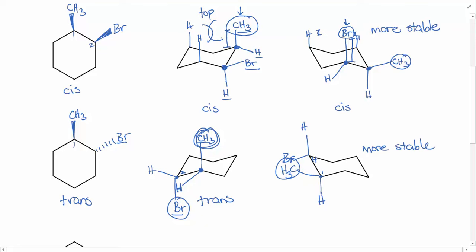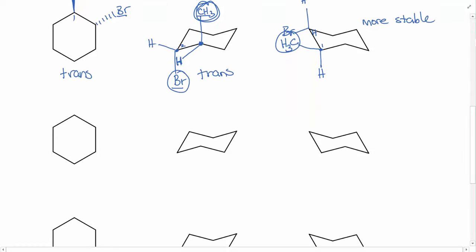Now, if you started with just a chair ring that had substituents on it — say the Br is here and a Cl is here with H's on the other positions — and you wanted to figure out whether this was cis or trans: on the first carbon, H is closer to the top and Br is closer to the bottom, so the non-hydrogen substituent is closer to the bottom. On the second carbon, H goes down and Cl goes more up, so Cl is closer to the top. Since one substituent is closer to the bottom and the other is closer to the top, this is a trans ring.